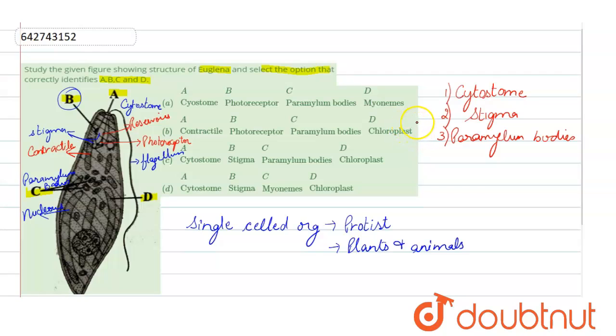Then we have to find out the D option which says, what is that? These are called the chloroplast. The D option is chloroplast.